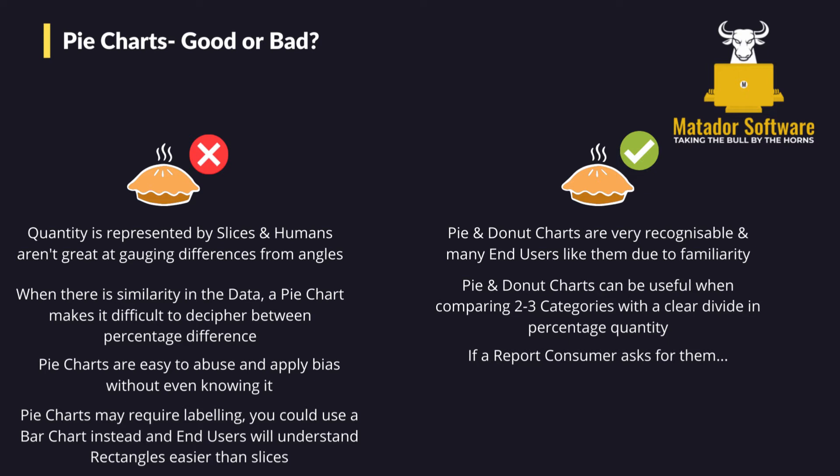In the case against pie charts, the quantity is represented by slices and humans aren't great at gauging differences from angles. When there's similarity in the data, a pie chart makes it difficult to decipher between percentage differences, especially if they're not very large. They are easy to abuse and apply bias without even knowing it — we're going to actually look at a famous case by Steve Jobs — especially when you look at things like 3D pie charts, which add even more complexity and are harder for the human to immediately understand. They may require labeling, so you could use a bar chart instead anyway, and end users naturally, or the human eye, understands rectangular shapes better, especially when there's an axis.